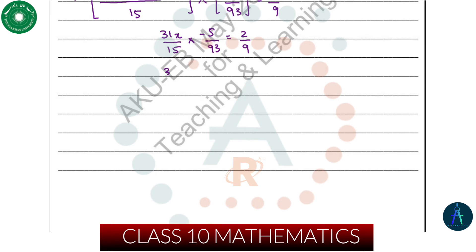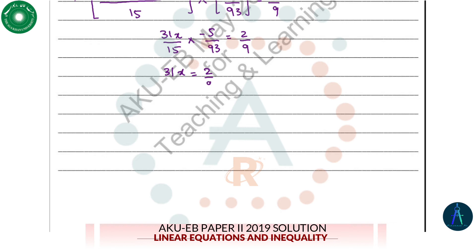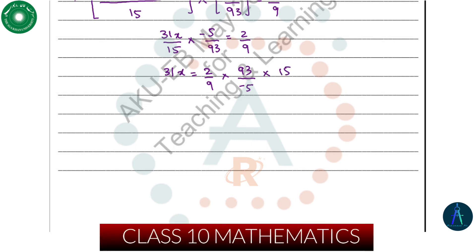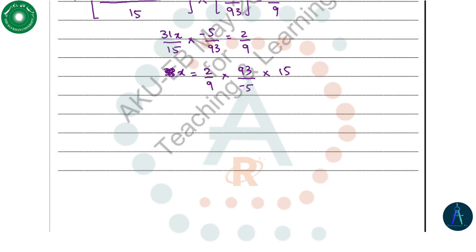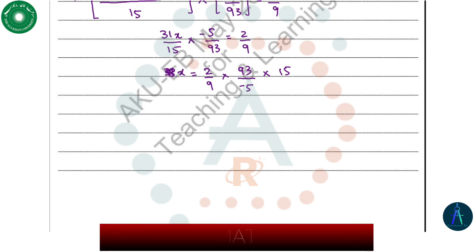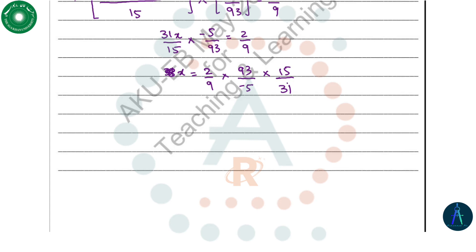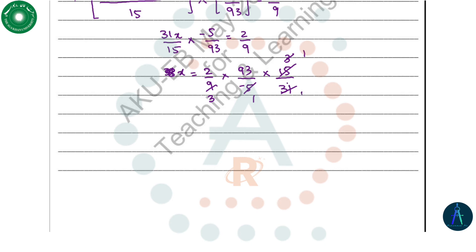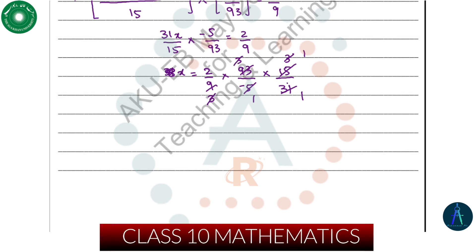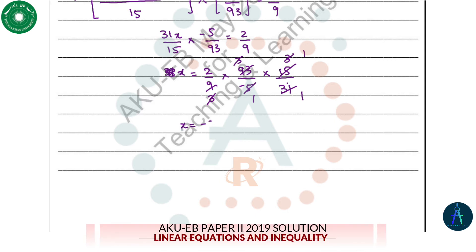Then we solve this expression further and make x the subject. So 31x will equal 2 over 9 multiplied by 93 divided by minus 5 and multiplied by 15. When we make x the subject, 15 goes to the other side and multiplies, 5 over 93 becomes 93 over minus 5, and 31 goes to the other side as division. After simplification, 3 and 3 cancel out, so finally we get the value of x, which is minus 2.